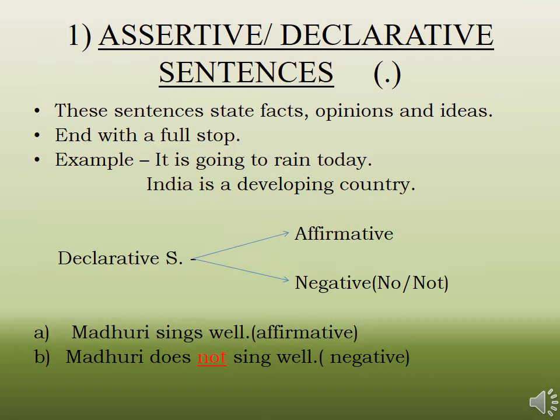Declarative sentences are of two kinds: affirmative and negative. A negative sentence will always have 'no' or 'not' in it. For example, 'Madhuri sings well' is a positive, affirmative sentence. 'Madhuri does not sing well' is a negative sentence — the word 'not' is highlighted so you can identify it as negative and not affirmative.